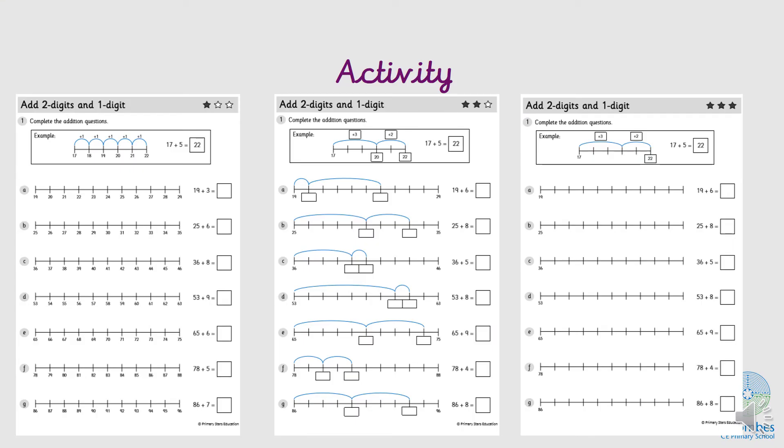So today's activity is all about using number lines and number bonds to help you. If you think you need a bit more help and you think you can just do the bounces of 1, then do the 1 star activity today. If you think, yeah I think I've got this, I want to give it a go, do the 2 star activity as it's going to help you with the jumps. And if you think, I'm super confident I can work out my own jumps myself, have a go at the 3 star activity.